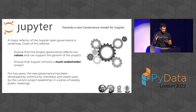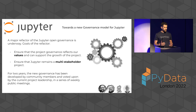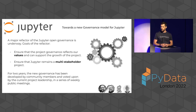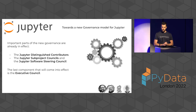Another really important development on the social side of Jupyter is a major refactor of Jupyter governance. The main goals were to ensure project governance reflects our values, supports project growth, and that Jupyter remains a multi-stakeholder project not controlled by a single group or organization. For two years, the new governance was developed by community members and voted upon by the current project leadership in a series of weekly calls — it's basically a constitution. Important parts are already in effect: we now have Jupyter Distinguished Contributors, sub-project councils for main sub-projects, and the Jupyter Software Steering Council now being set up.